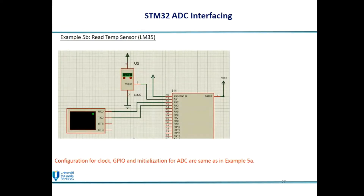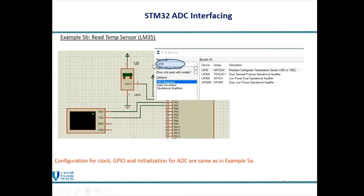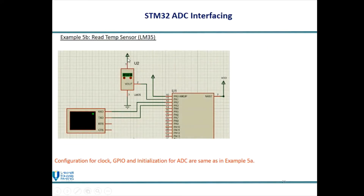This is the circuit diagram drawn in Proteus. You go to the Proteus library, type the keyword LM35, and select the LM35 Precision Centigrade Temperature Sensor. This sensor has 3 pins: pin 1 is connected to power, pin 3 is connected to ground.